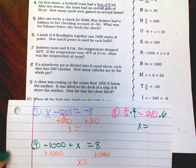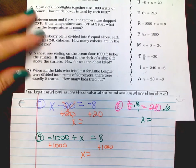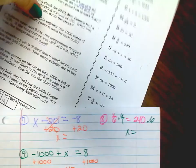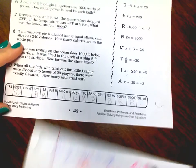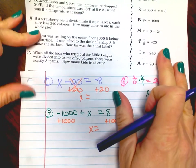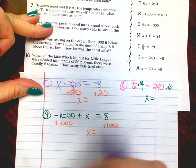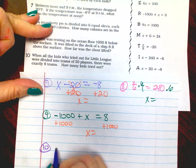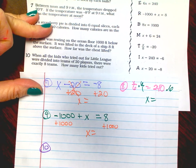And we have number 10. Number 10. When all the kids who tried out for Little League were divided into teams of 20 players, there are exactly 8 teams. How many kids tried out?